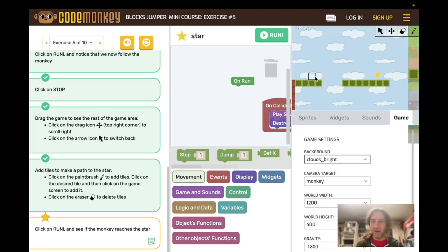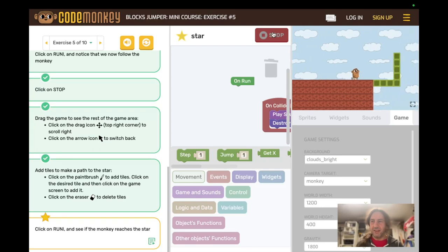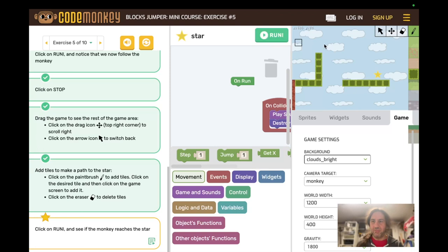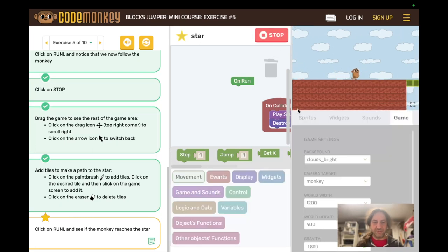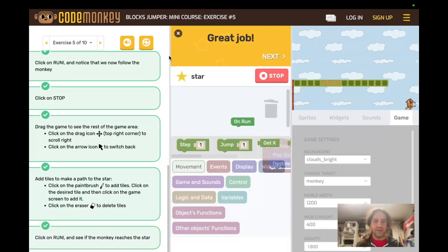If you make the path impossible and hit run, the monkey will go to the end and stop. And you will have to stop, erase, and fix the path to the star. Run. Great job.